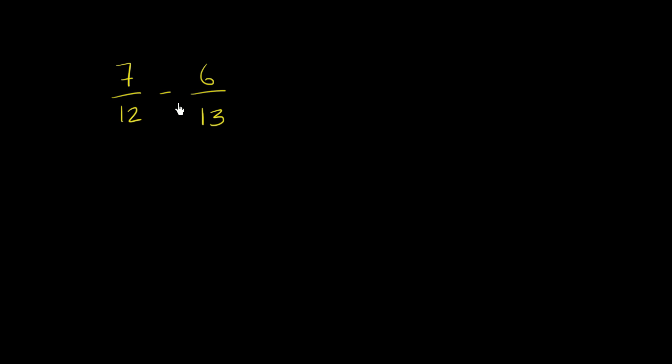Let's figure out 7 twelfths minus 6 thirteenths. And in order to be able to do this, we need to find a common denominator. We notice that they're not common right over here.